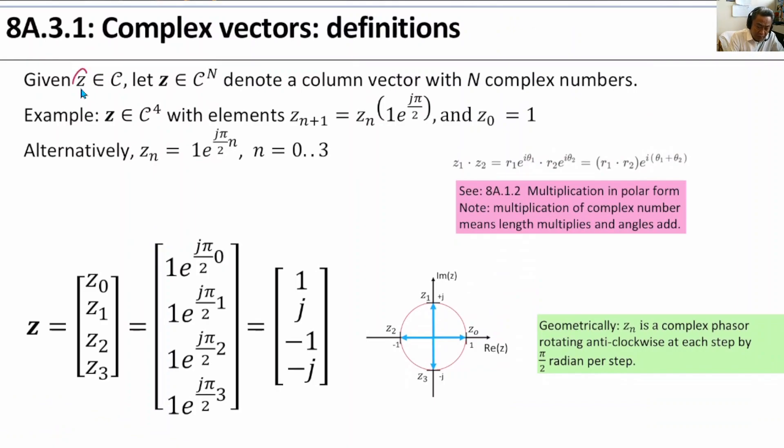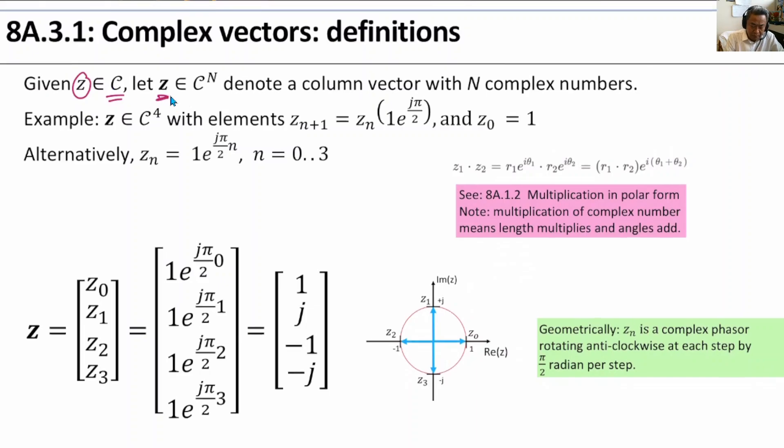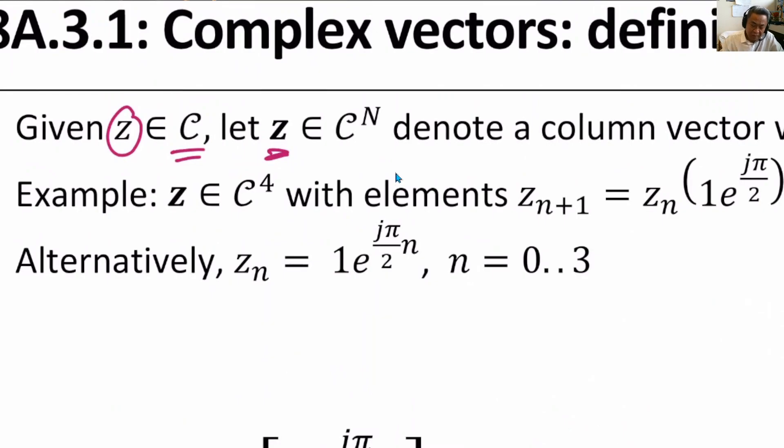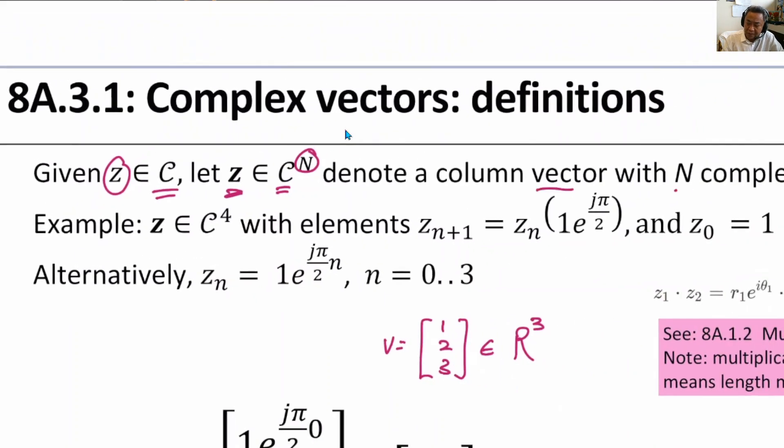If z belongs to the complex numbers, we use this notation z is an element of the set where the symbol C stands for the set of complex numbers. Then we use bold to represent a vector of complex numbers. If you have v equals one, two, three, then v is a real vector with three elements. We use almost the same notation. We use the exponent n on top of the set C to say that z is a column vector with n complex numbers.